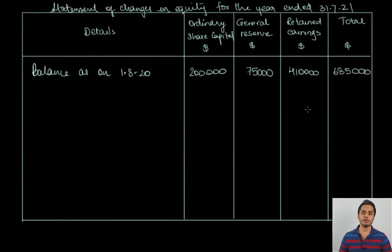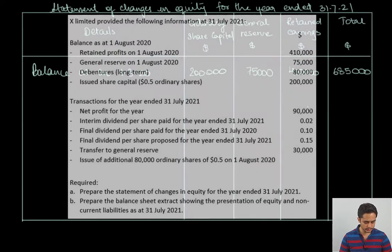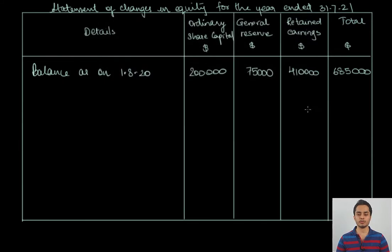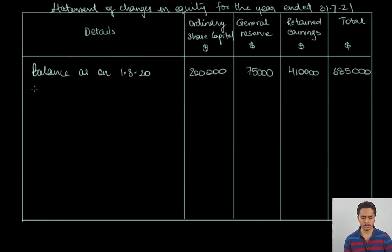Net profit for the year is given as $90,000. Let us record the net profit for the year. The net profit for the year will be written in the retained earnings column.